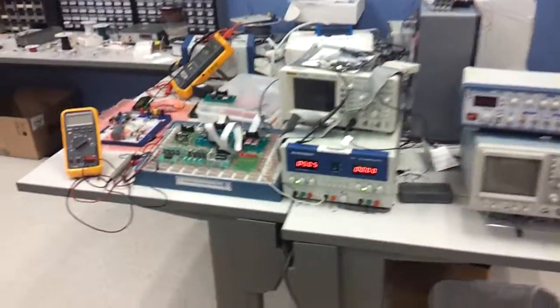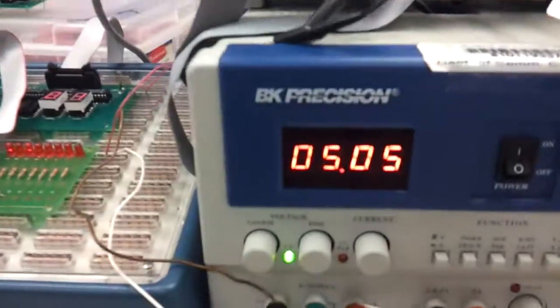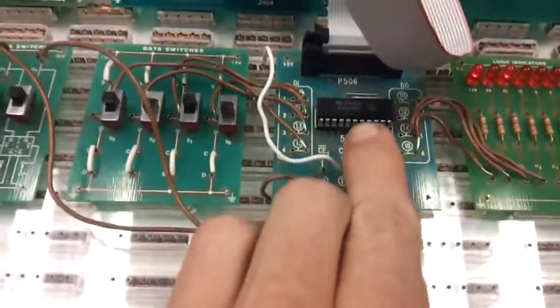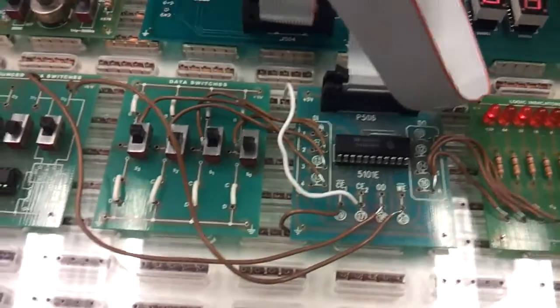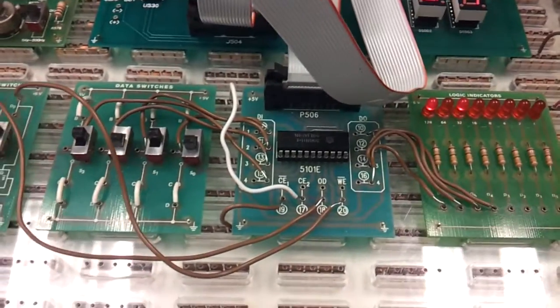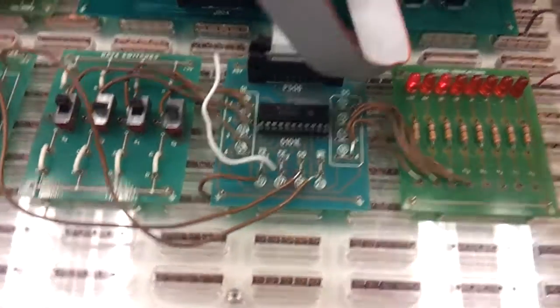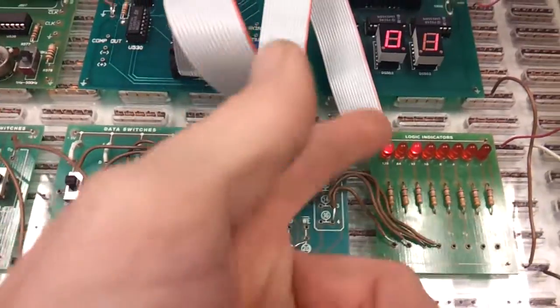Alright, tonight's video is a static RAM lab consisting of this static RAM IC. It has 256 addresses and 4 bits of data on each address.